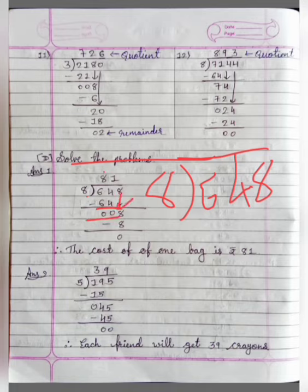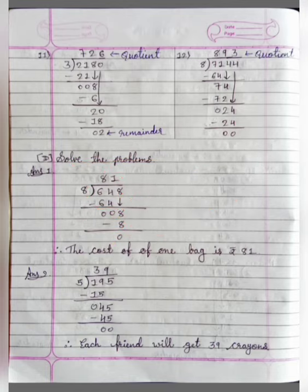We will bring down this 8 here. 8 ones are 8. 8 minus 8 is equal to 0. So the cost of 1 bag is Rs. 81.